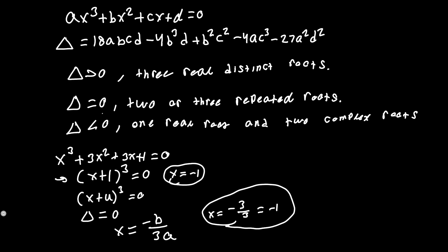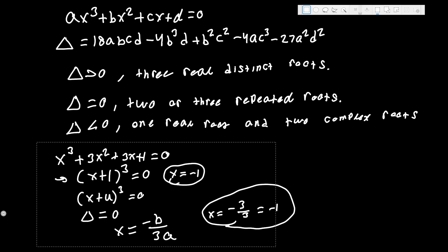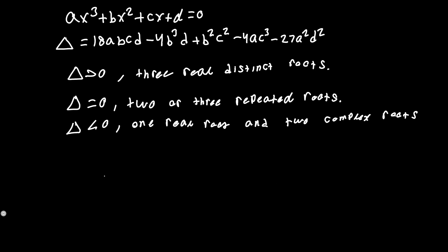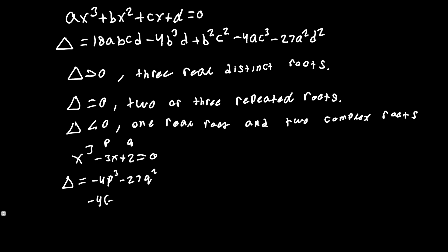For perfect cubes, the discriminant is always 0 and there are 3 repeated roots. Now for the depressed cubic x³ - 3x + 2 = 0, we use Δ = -4p³ - 27q², with p = -3 and q = 2: we get -4(-27) - 27(4) = 108 - 108 = 0.